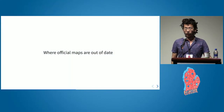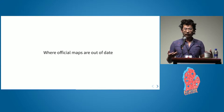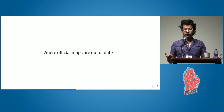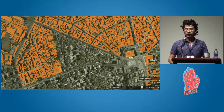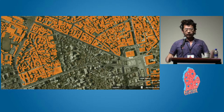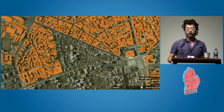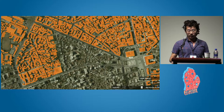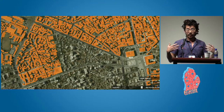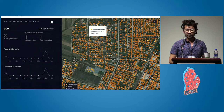Another thing we're really interested in using this for is where official maps are out of date. You've probably all had some experience with government maps of various types — and as you probably know, a lot of them can be pretty behind in terms of when they were last updated. This is a government data source of cadastral parcels from Tirana in Albania. As you can see, they last did this survey several years ago — much of the city is not even represented, and much of the city has changed since they last did this, especially in some of the rural areas where they just haven't updated data in a long time.